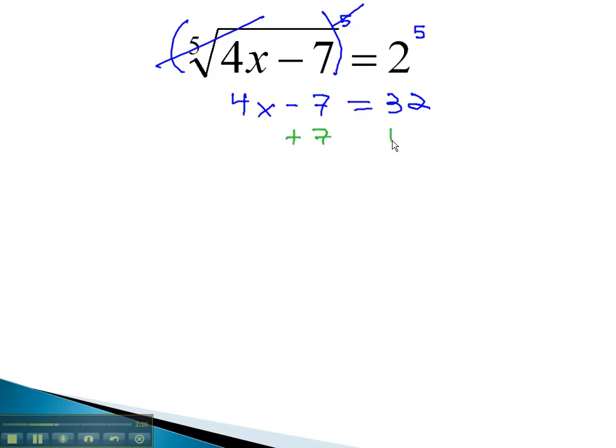We can then solve by adding 7 to both sides, and 4x is equal to 39. Finally, dividing by 4 tells us that x is equal to 39 over 4.